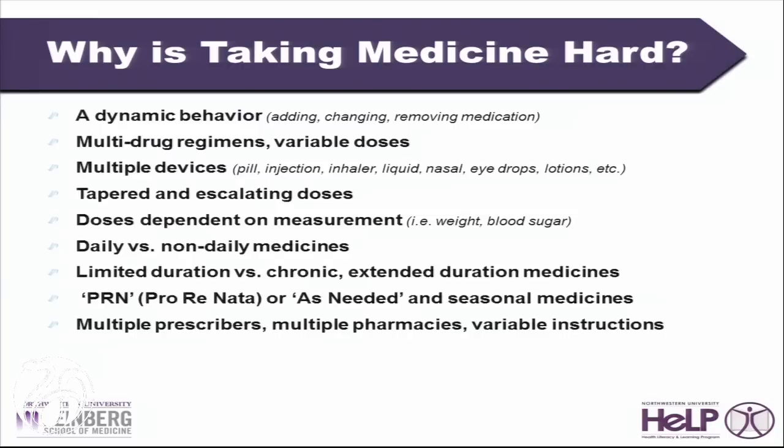Multiple prescribers. Multiple pharmacies. Variable instructions you receive from both. Brand versus generic drugs that change over time and have what we call variable trade dress — one moment your generic medication for a particular chronic condition could be a small white pill, and if your insurance changes and you get a new generic version, it could change its shape altogether.